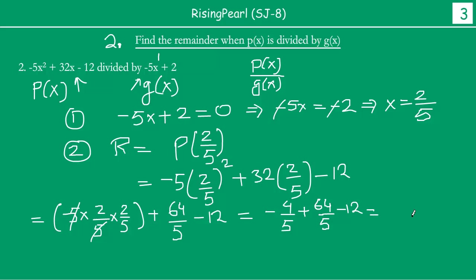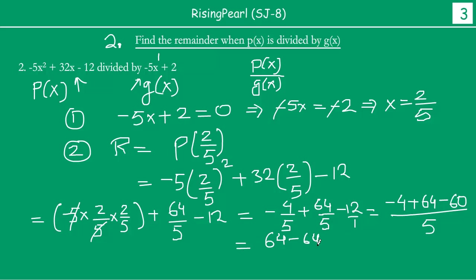Taking LCM of 5: we get (minus 4 plus 64 minus 60) by 5. Now minus 60 minus 4 combined gives minus 64. So we have 64 minus 64 by 5, which is 0 by 5, which equals 0. So the remainder when we divide p(x) by g(x) is 0.